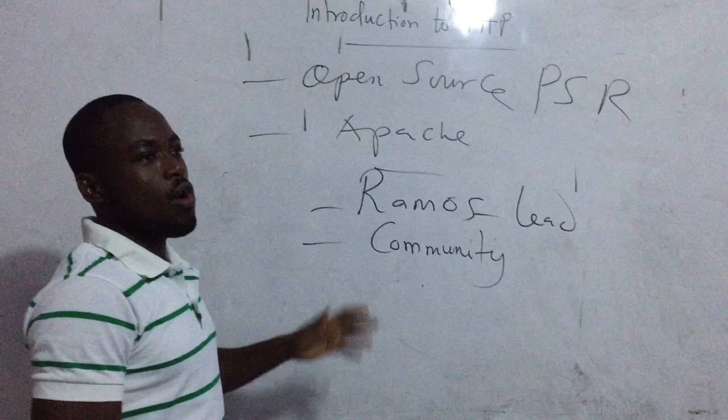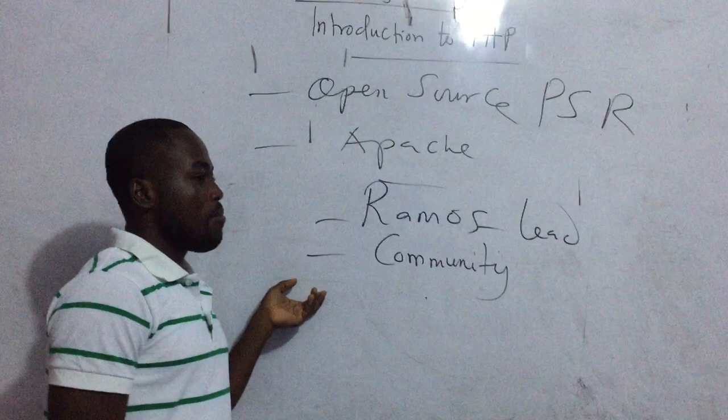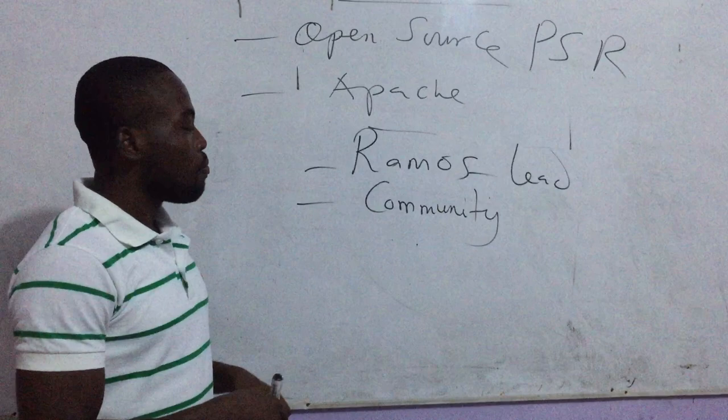Unlike Java, where parts are owned by Oracle and parts owned by the community, PHP is fully community-driven. C# has been made open source by Microsoft. Swift, however, is purposely owned by Apple — the license is not owned by the community.